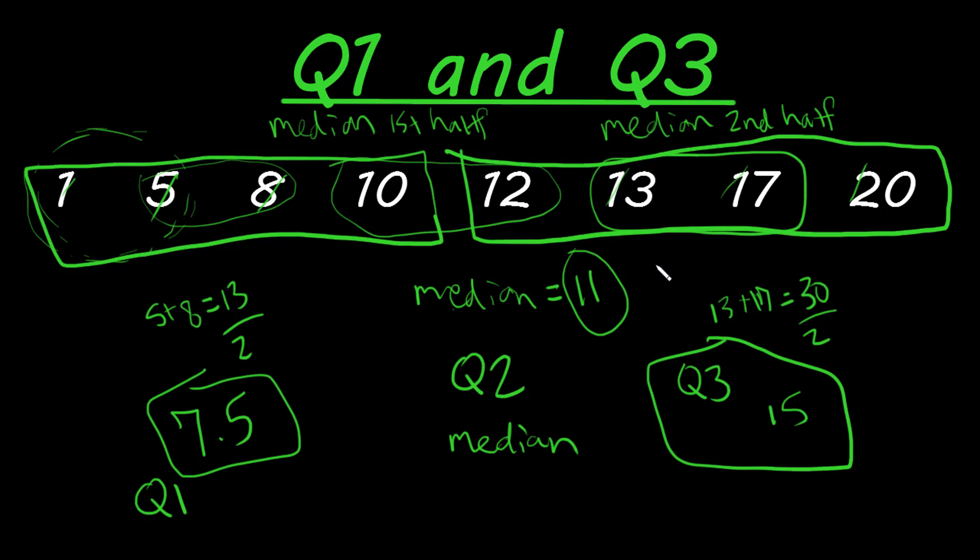And that makes sense, because Q3 is the value where 75% of our data points are under that value. And we can agree that that is the case here. So this does make sense. And that's just the basic definition and a quick way to find Q1 and Q3.